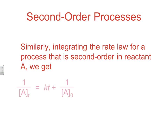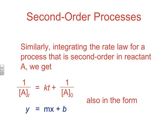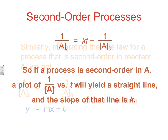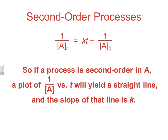A second order process is a little different. This is what we get when we integrate our second order rate law expression — it's not natural log, it's inverse or reciprocal. It's in the same form as y equals mx plus b. So if you graph the reciprocal of the concentration versus time and get a straight line, that tells you it's a second order process. Because you get an uphill sloping line, the slope of that line equals k.